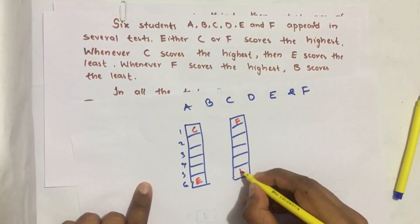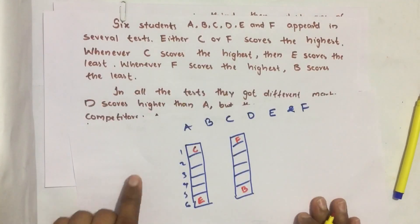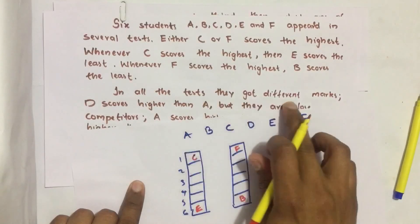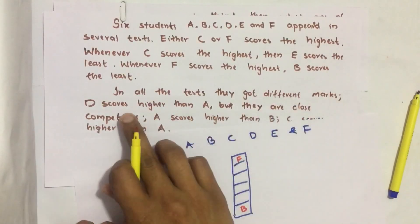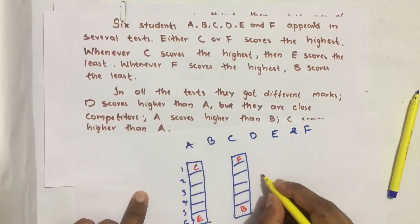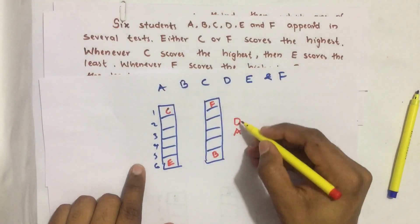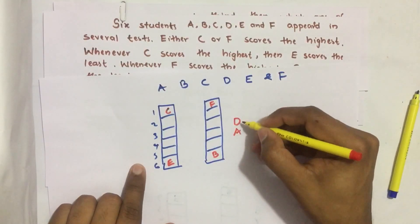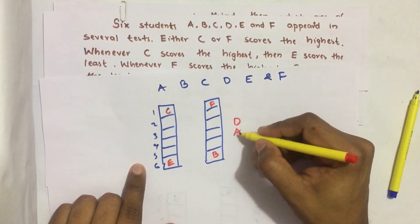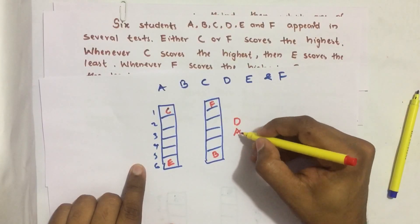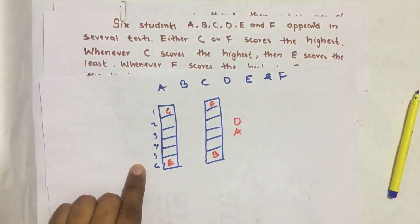D scores higher than A but they are close competitors. That means there is only a small difference between A and D. They are always close, and D will always be above A.